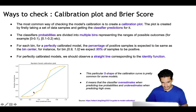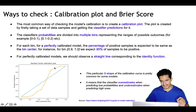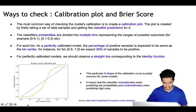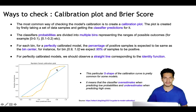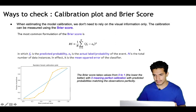For a perfectly calibrated model we should observe a straight line corresponding to the identity function. But normally an S-shape calibration curve is pretty common for ML models, which means the model is overestimating when predicting low probabilities and underestimating when predicting high ones — the predicted probabilities are very high but the actual number of positive samples is low.